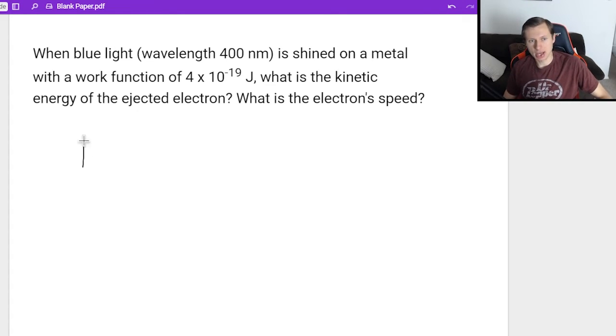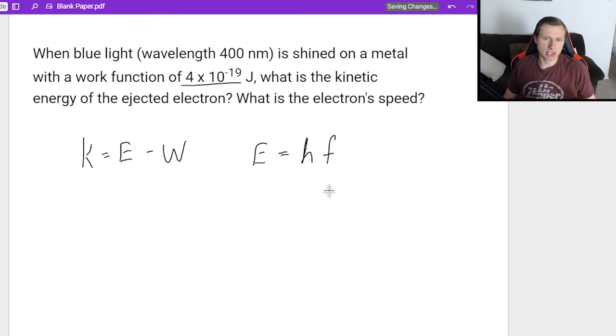So first we start out with k equals e minus w. We have w, it's 4 times 10 to the negative 19th. Now we need to find e, the energy. So energy can be found by using e equals h times f, but we don't know the frequency. So actually first we got to find the frequency.